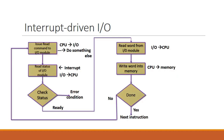Here is the flowchart of interrupt-driven input-output. It starts the same as programmed input-output: the CPU issues a command to the input-output device, but then does something else — this is the new part. After issuing the command, the CPU continuously executes other instructions; a context switching occurs. When the peripheral device is ready for data transfer, it sends an interrupt to the CPU.